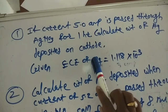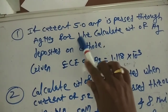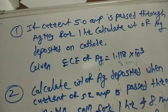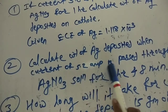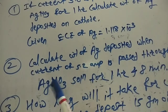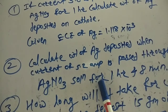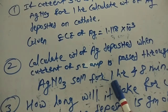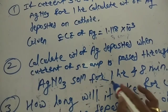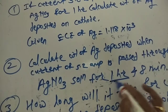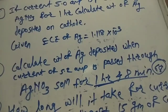Homework problem 2: calculate the weight of silver deposited when a current of 5.2 ampere is passed through silver nitrate solution for 1 hour and 8 minutes. Use Faraday's law W = Z × I × T. First convert 1 hour into minutes; the total time is 68 minutes — that is the hint for solving this problem.